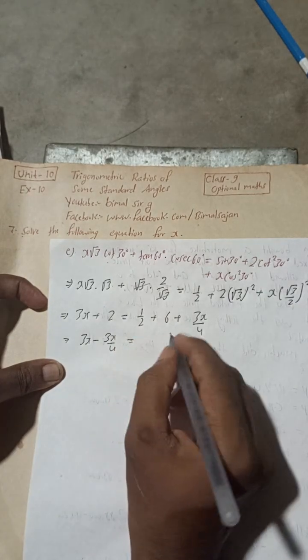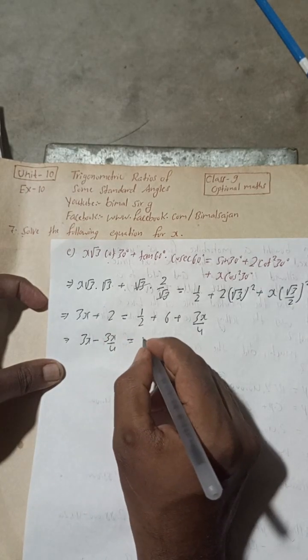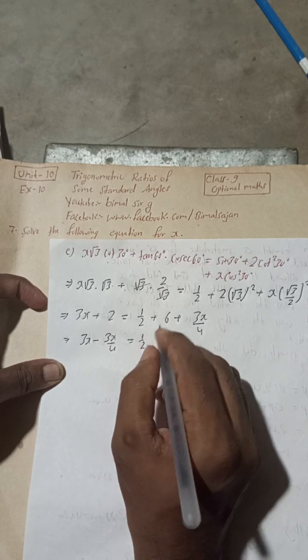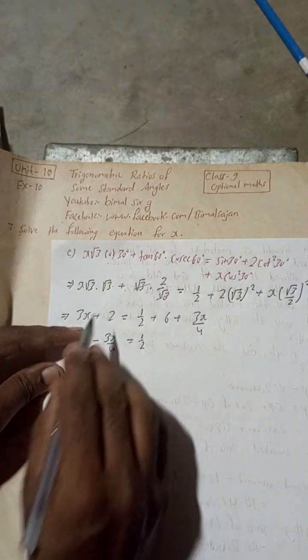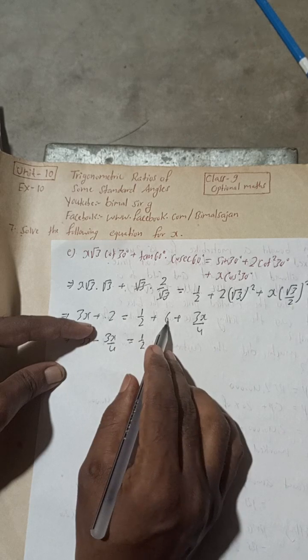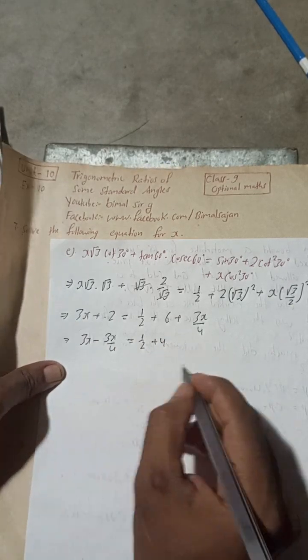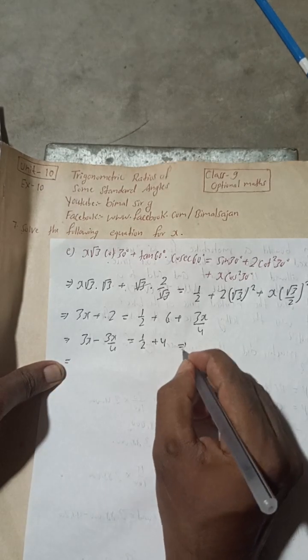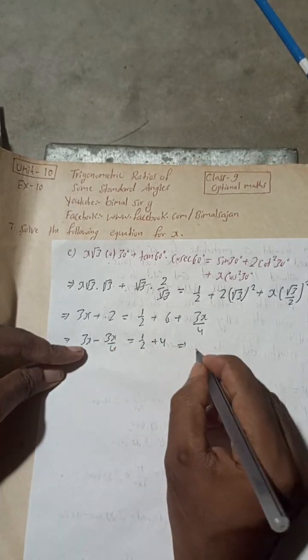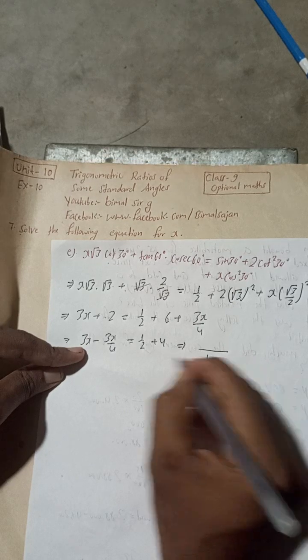Take this side, this is minus. And now this is 1 by 2, and this is 6. And when this plus 2 comes this side, it will be minus 2, so 6 minus 2 is equal to plus 4. Now take here LCM, here 4 is LCM, so 4 is LCM.